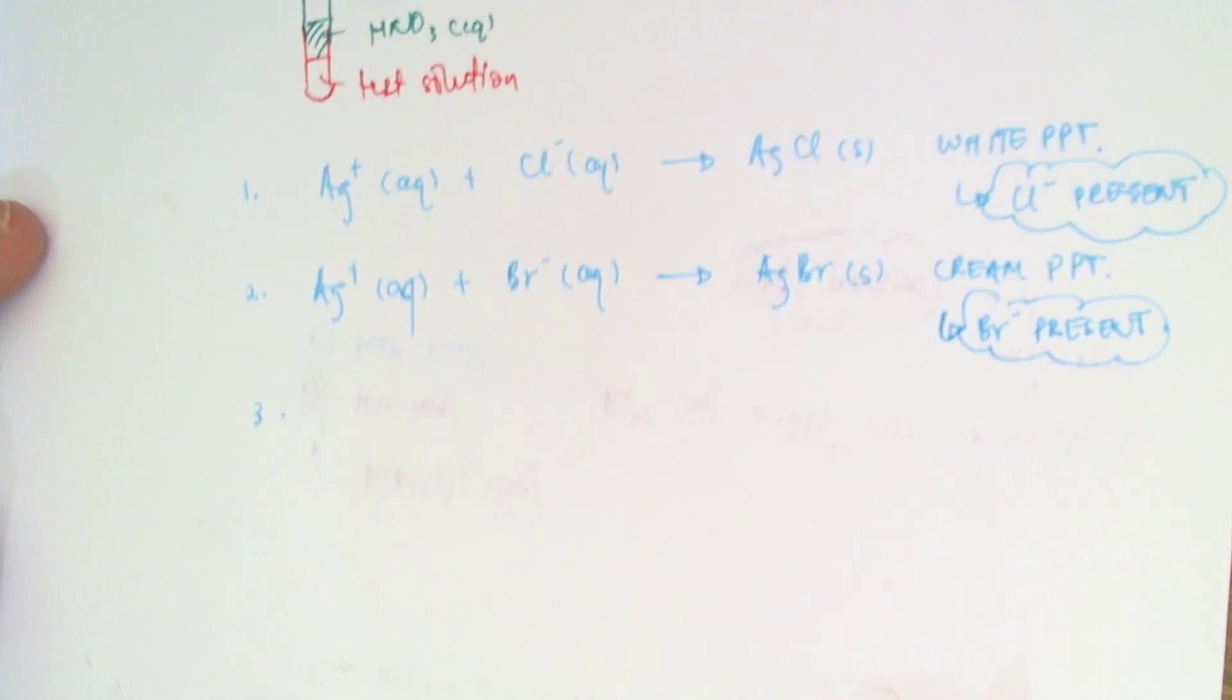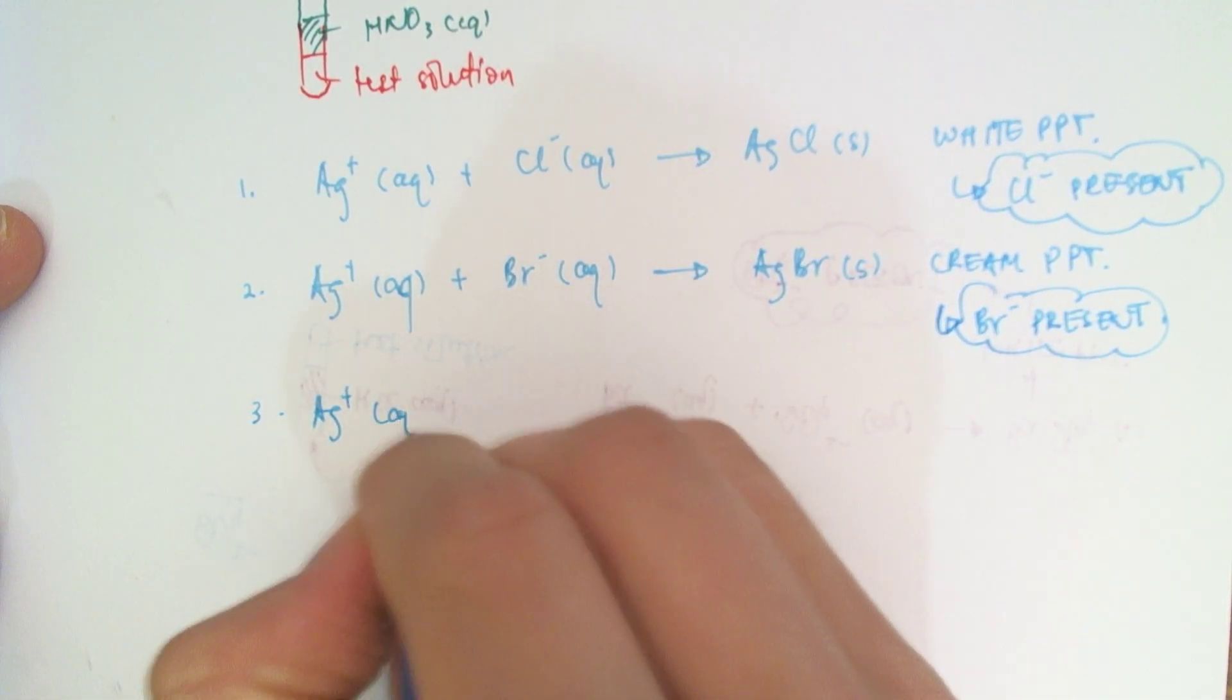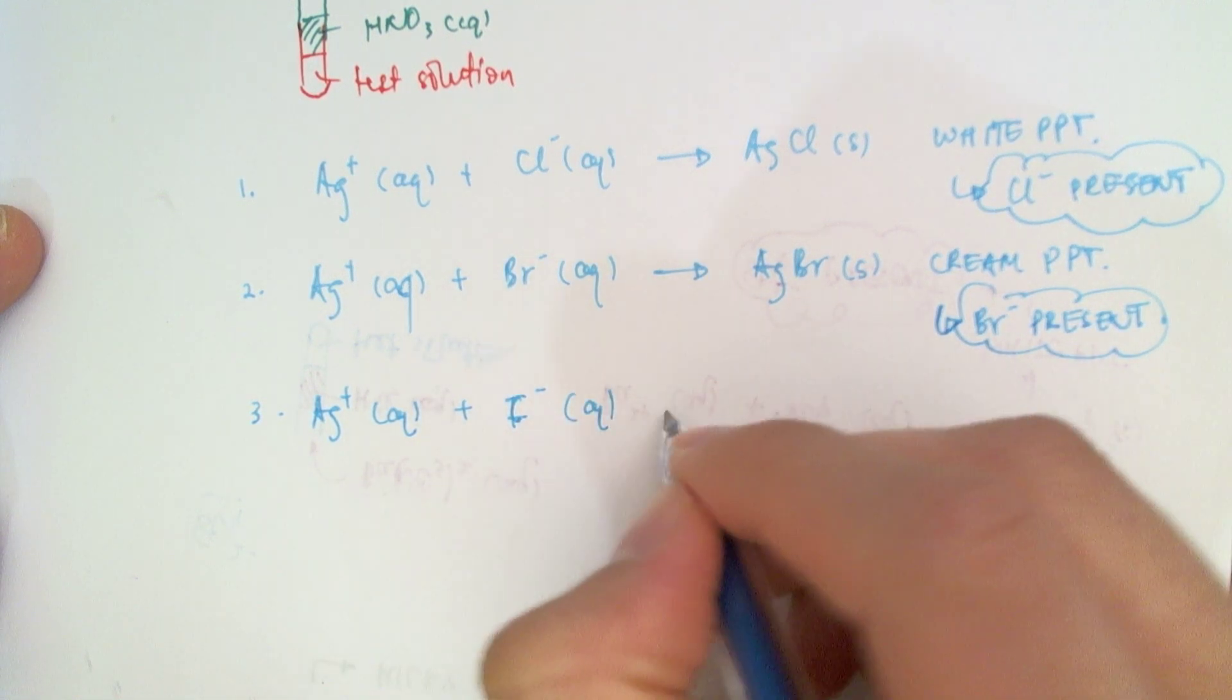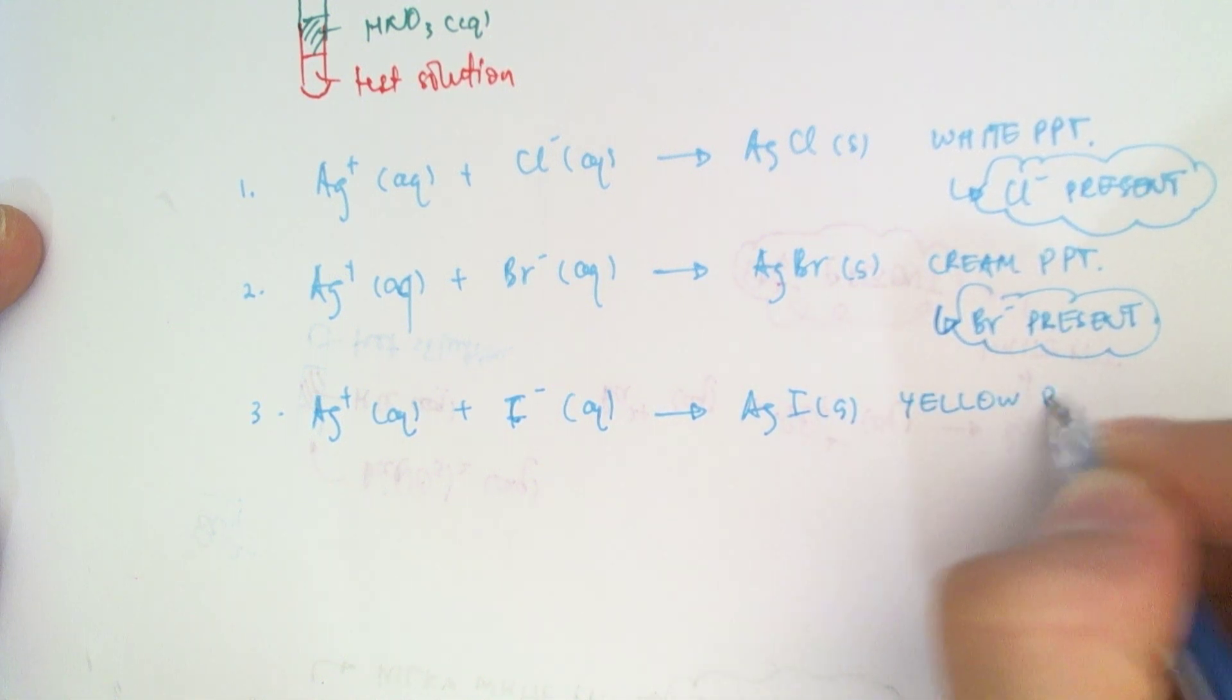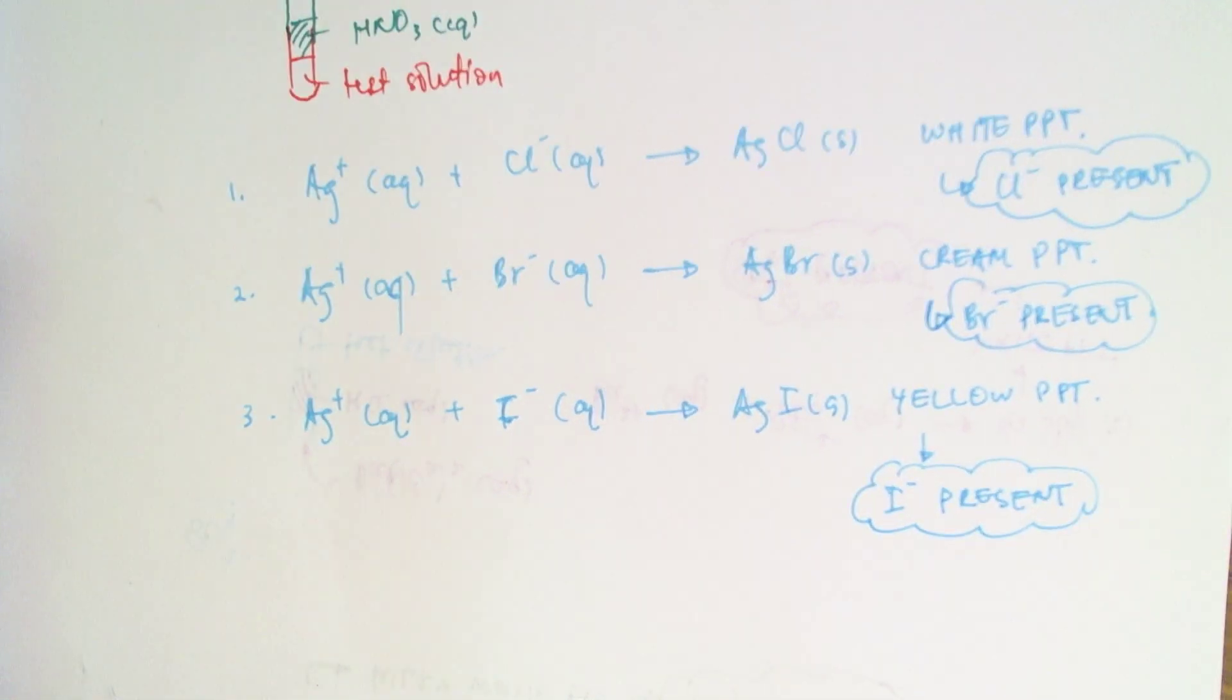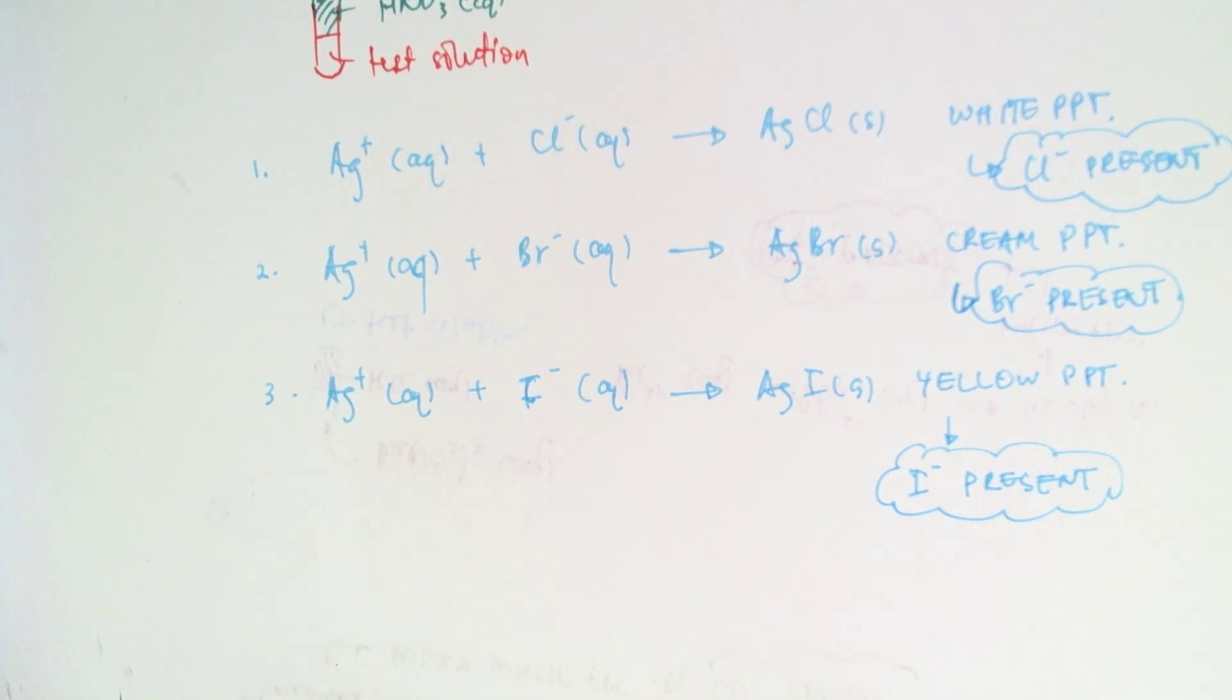And finally, the colors get darker and darker. When I get to iodide, I'm going to get a deep yellow precipitate. And this confirms the presence of iodide ions. And this precipitate will not dissolve in ammonia. So that's one way to confirm it if you want to.